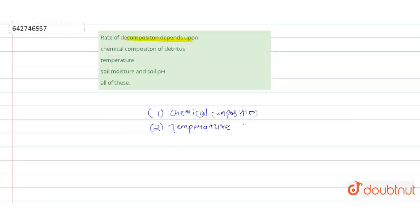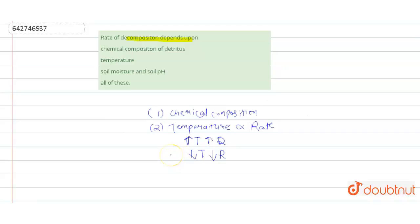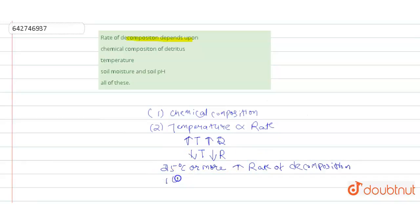The rate of decomposition is directly proportional to the temperature of the soil. With an increase in soil temperature, the rate of decomposition also increases, and with a decrease in temperature, it also decreases. For example, a temperature of 25°C or more enhances decomposition, but a temperature lower than 10°C reduces the rate of decomposition.